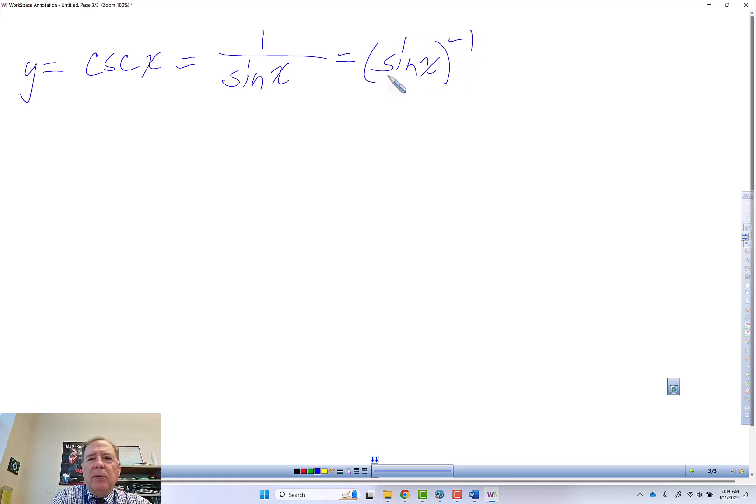So sine of x is the u in the middle. So u equals sine of x, u prime equals positive cosine of x.